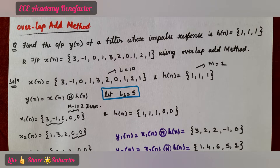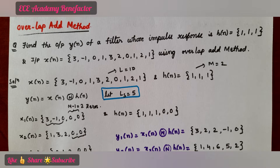Hello dear students. The topic of the class is the overlap add method. In this class we will be finding the output response y(n) for the given input x(n) and impulse response h(n) using the overlap add method.